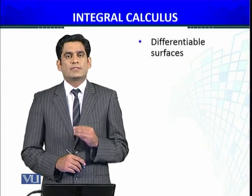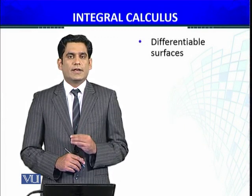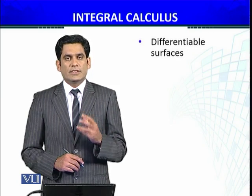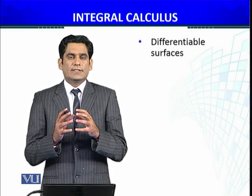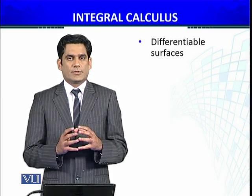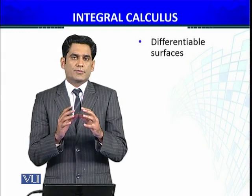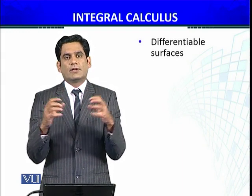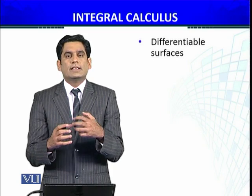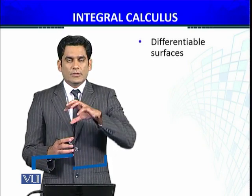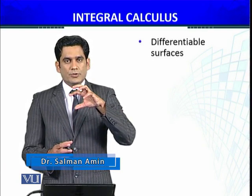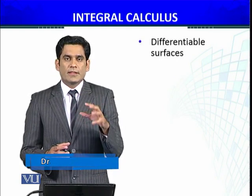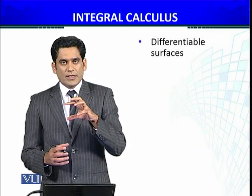We are going to define differentiable surfaces, but before that let me recall something. The double integrals in R² could be considered as finding the area of a certain region. If your function f(x,y) equals 1, then integrating over the domain gives you the partitioning of that domain. The double integral of f(x,y) = 1 over region R will give the area of that region.